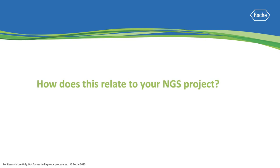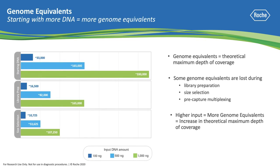So how does this relate to your NGS project? One human genome equivalent is 3 picograms or 0.003 nanograms, and we have the ability to use various amounts of DNA into library prep. We know that some genome equivalents are lost during library preparation, size selection, and pre-capture multiplexing. But by increasing your input, you have more genome equivalents and a higher theoretical maximum coverage.